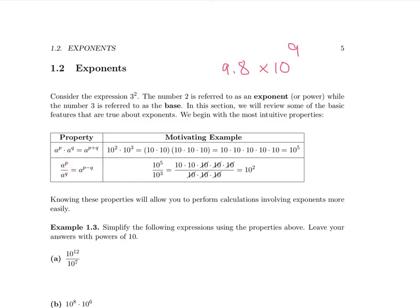If you take a number a, raise it to the p, and then take the same number a, raise it to the power q, and then divide, the result is the number a raised to p minus q. Let's look at a motivating example. Suppose we take 10 to the 5th and divide by 10 cubed. 10 to the 5th is 5 factors of 10; 10 cubed is 3 factors of 10. We have 3 factors of 10 that can be cancelled in the numerator and denominator, leaving 2 remaining factors of 10 in the numerator. Notice that 5 take away 3 leaves 2.